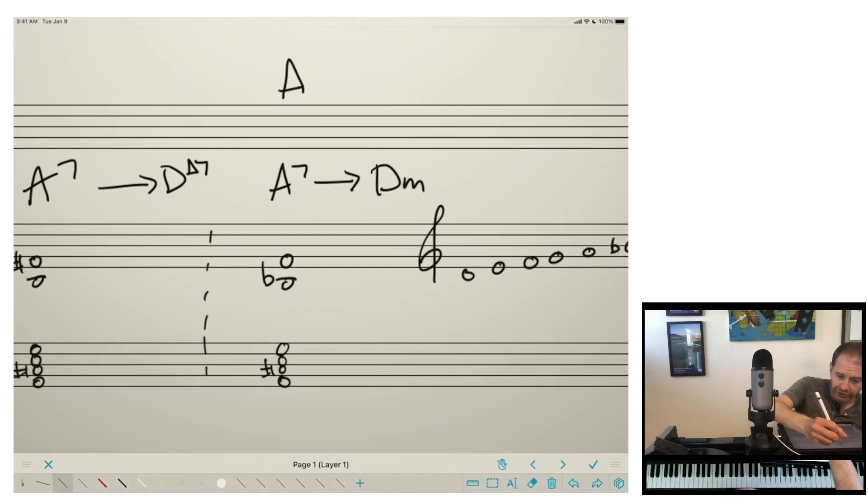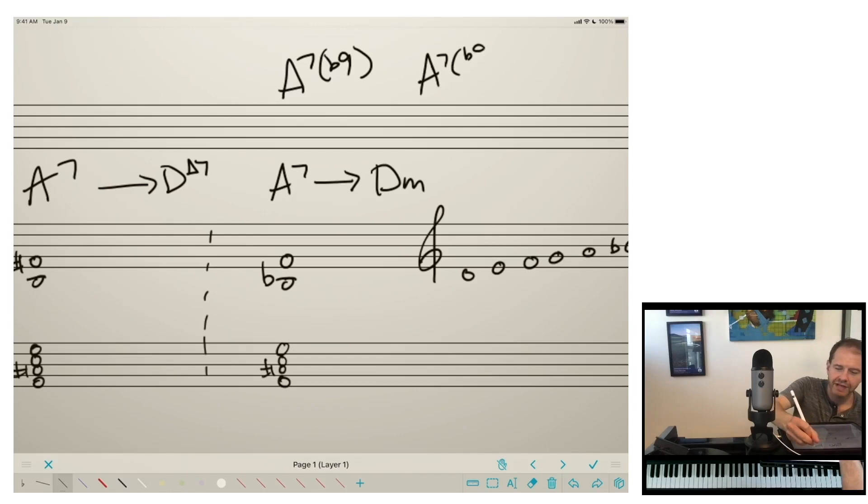So a B flat and an F. Now, it's important to realize it's pretty typical to include the flat ninth in that chord symbol. It's relatively rare to say A7 flat nine, flat 13th. But as a musician, we need to know that if we're going to include a 13th, it is going to be flat if we're going to a minor key center.